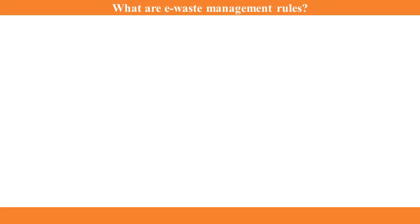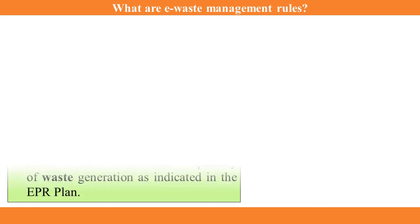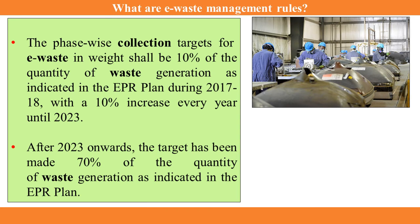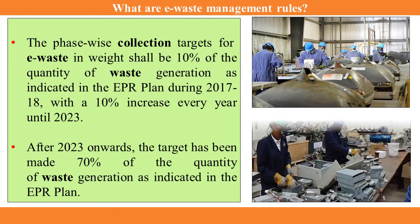Let's see what are the e-waste management rules. The phase-wise collection targets for e-waste in weight shall be 10% of the quantity of waste generation, as indicated in the EPR plan during 2017–18, with a 10% increase every year until 2023. After 2023 onwards, the target has been made 70% of the quantity of waste generation as indicated in the EPR plan.